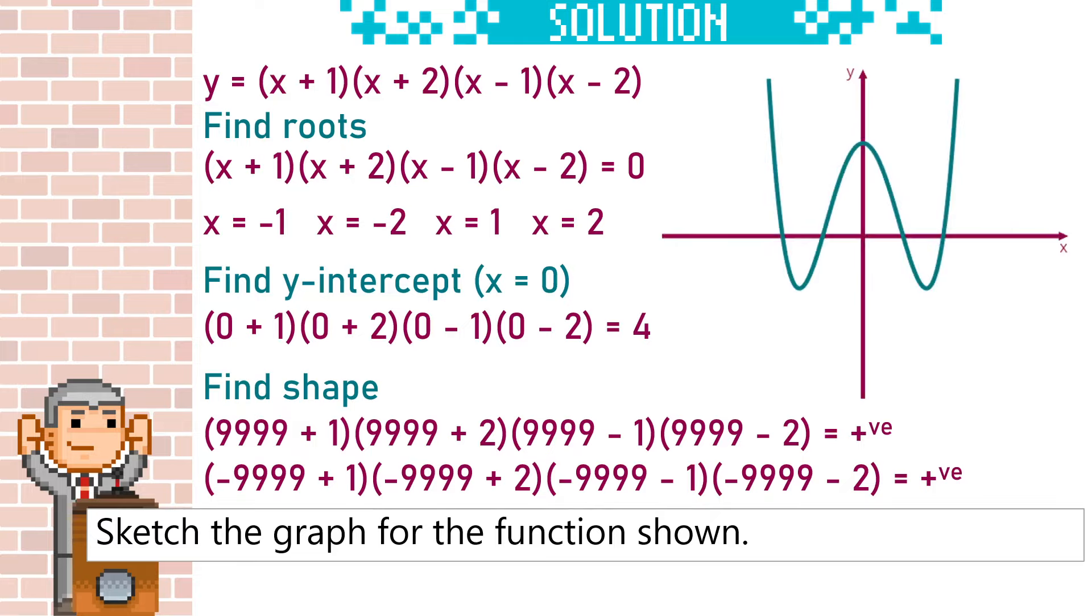We can now draw the graph. Positive quartics start high and end high. The roots are minus 2, minus 1, 1 and 2, because these are our x-intercepts, and our y-intercept is 4. Make sure to label these values onto the graph.